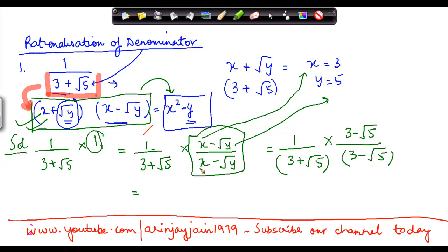So we can write 1 into 3 minus under root 5 will give me 3 minus under root 5 divided by x square minus y. Now what is the value of x here? x is 3.